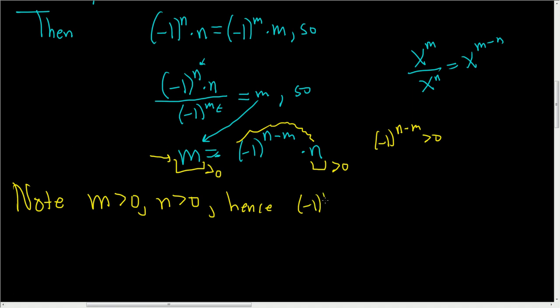Hence, this is positive. But there are only two choices for this number: one or negative one. So (-1)^(n-m) = 1. Hence, m = 1 · n = n. So f is injective.